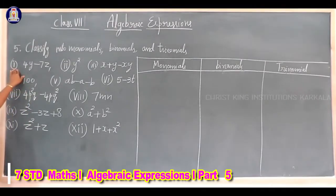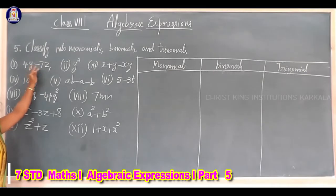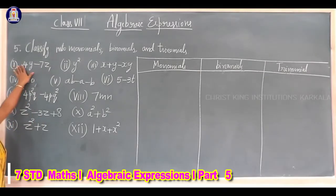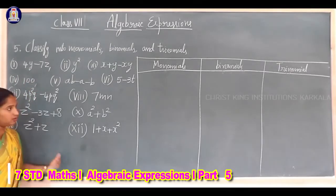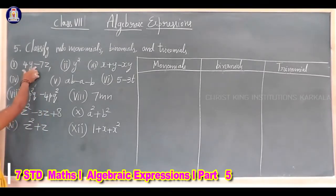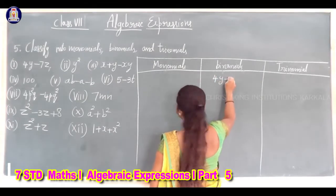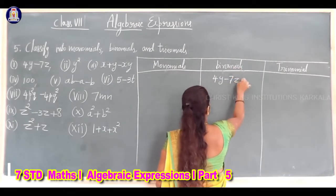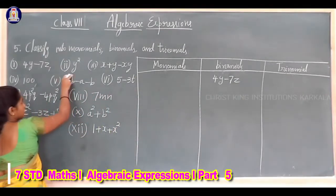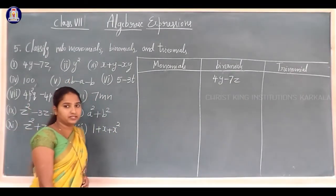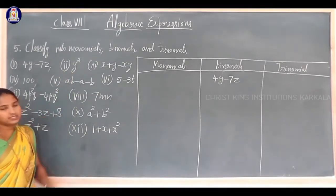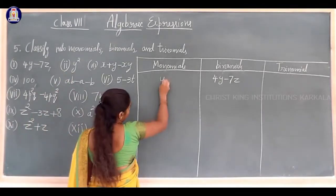Now observe the first expression: 4y minus 7z. This expression contains two terms — one is 4y and another is minus 7z — so there are two terms. Two terms means it is a binomial. The second expression is y squared, just one term, so y squared is a monomial.